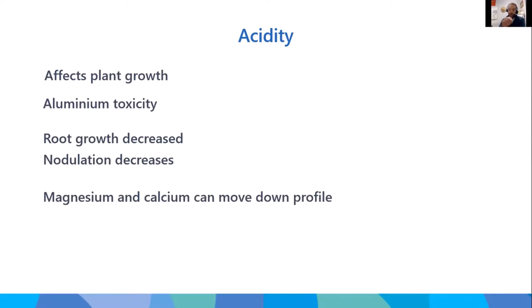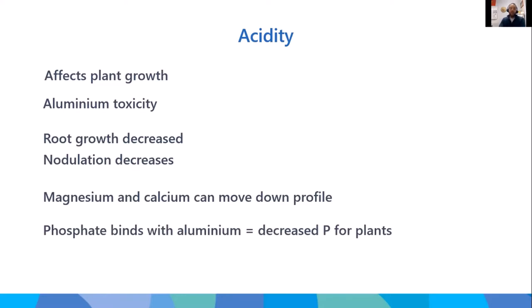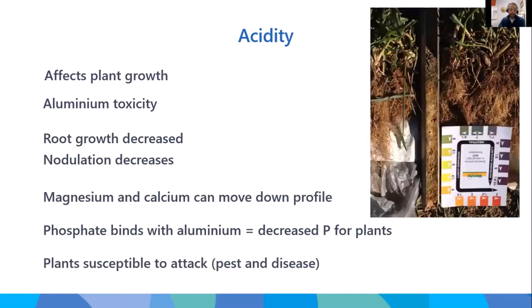Some people say we can breed aluminium-tolerant plants, but they'll also be magnesium- and calcium-deficient, requiring those additions. When there's a lot of aluminium in the soil solution, it binds to phosphate and takes it out of solution. So even if you're adding P via fertilizer or organic amendment, when that P becomes plant-available it will bind with aluminium and become unavailable to the plant — creating an inefficiency where you spend more money and get less.